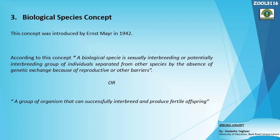Reproductive isolation plays a key role here. There are two kinds of reproductive isolation: pre-mating and post-mating. A biological species is separated from other species by means of reproductive isolation or other kinds of barriers that prevent the exchange of genetic material between species.